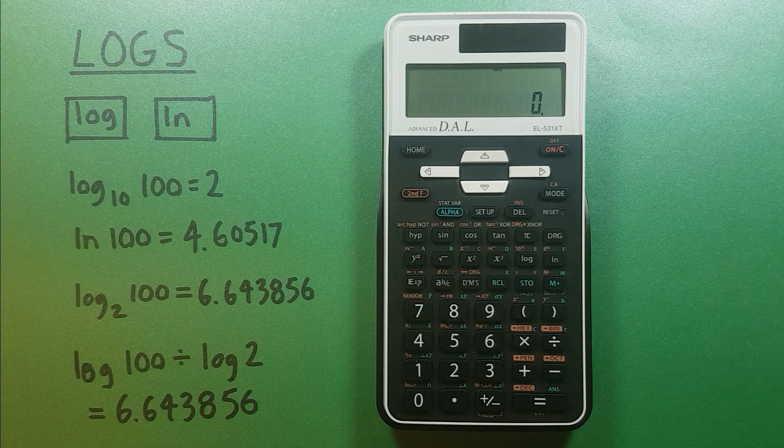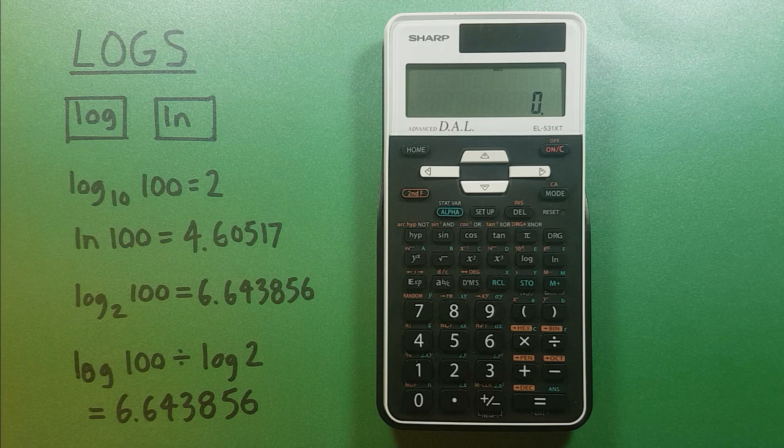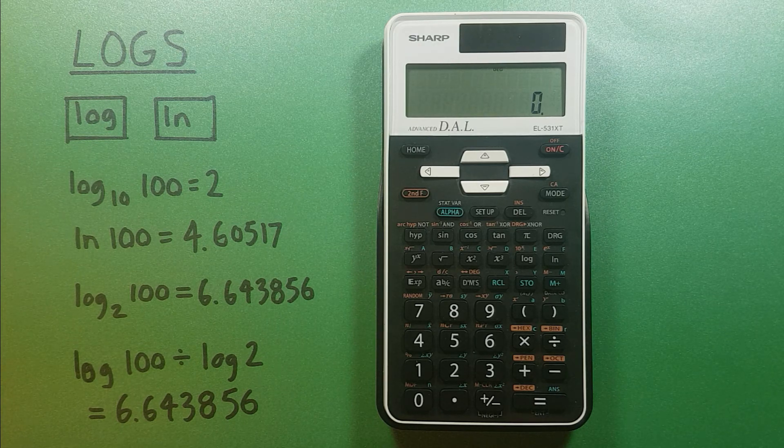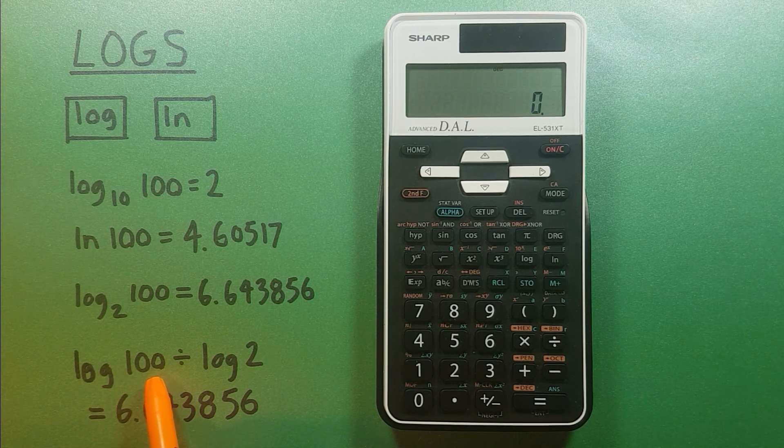But what if we want to find a log base that isn't base 10 or natural log? To do that we need to use something called the change of base formula where we divide the log of the number by the log of the base.